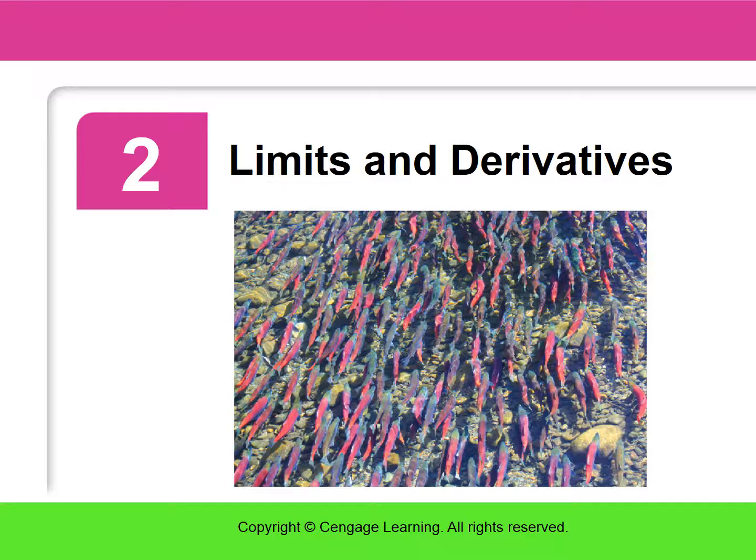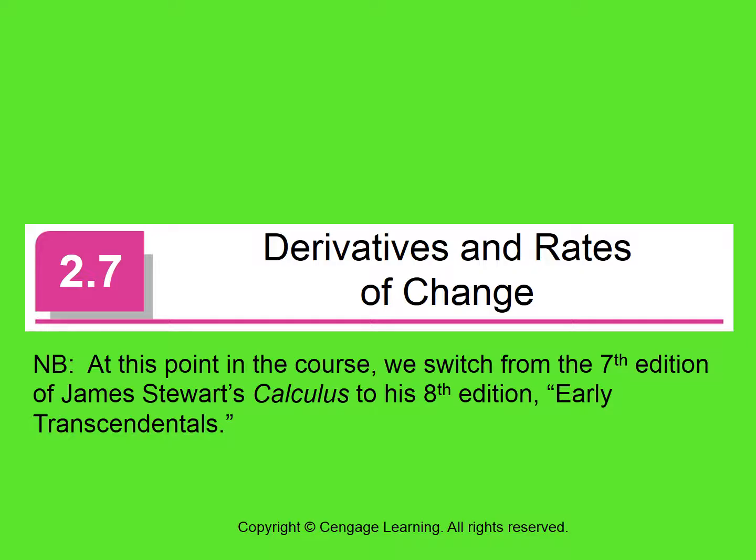We have done chapter one of the seventh edition of Stewart's Calculus, and we're going to be switching over to the eighth edition, Early Transcendentals. There is continuity between the content of the two, so this is the appropriate place to make the switch.